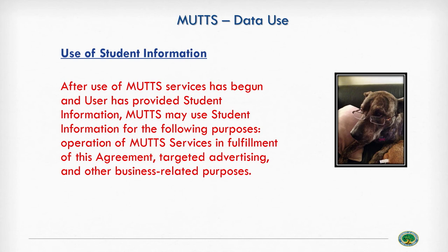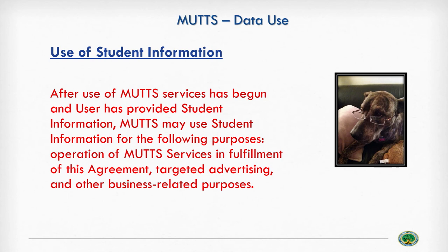Also listed: targeted advertising and other business-related purposes. Targeted advertising is a big red flag, and 'other business-related purposes' — what on earth does that even mean? That could mean just about anything depending on what business you're in. This is a bad dog provision.